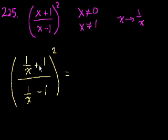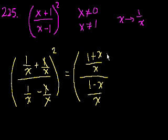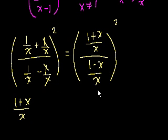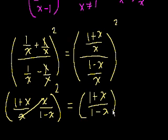That equals: 1 over x plus x over x, since 1 is the same as x over x, over 1 minus x over x. So this equals 1 plus x over x, divided by 1 minus x over x, everything squared. This inside the brackets is the same thing as 1 plus x over x, times x over 1 minus x — I just multiplied by the reciprocal. The x's cancel out, and we get 1 plus x over 1 minus x, squared.